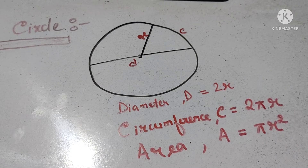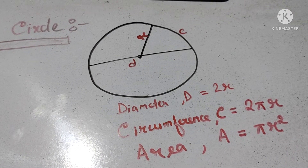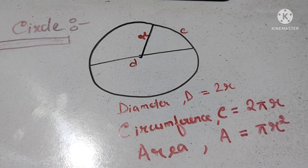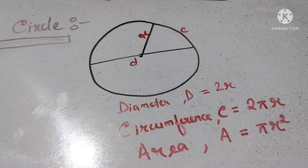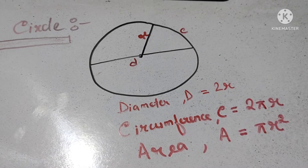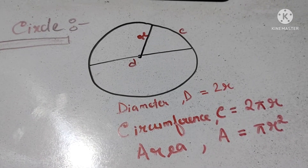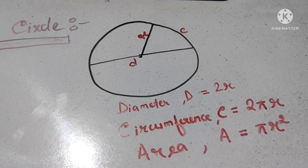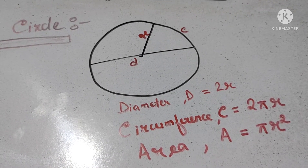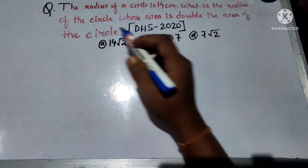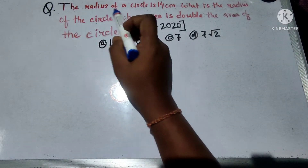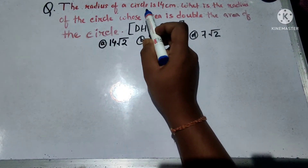The circle's diameter is 2r, the circumference is 2πr, and the area is πr squared. This is DHS 2220.